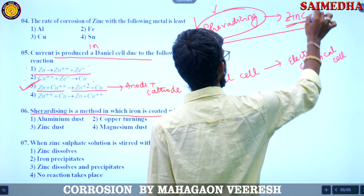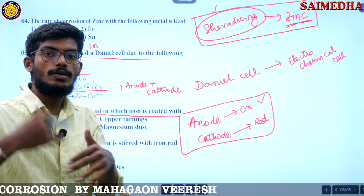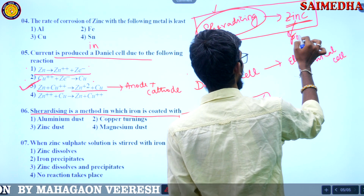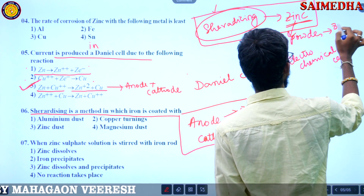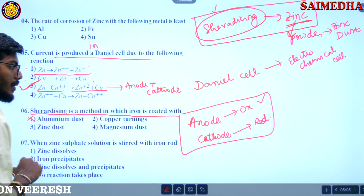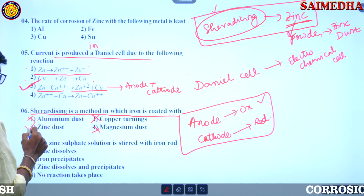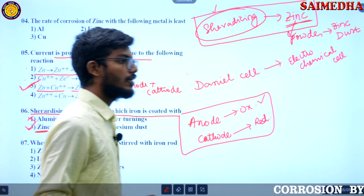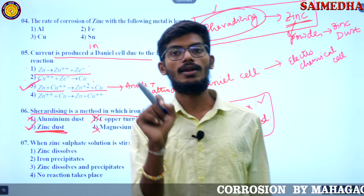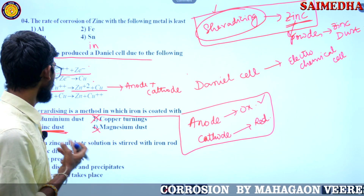Sherardizing is the spraying of zinc dust on another metal to protect it from undergoing corrosion. Zinc is made into powder — zinc dust — and coated on another metal. Aluminum dust is not sherardizing. Copper turnings is not. Magnesium dust is also not. Only zinc dust coated on another metal to protect it from corrosion is called the sherardizing process.